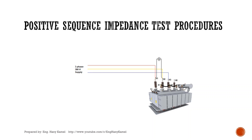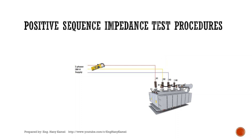Voltage measurement between H1 and H2 will be recorded. Voltage measurement between H2 and H3 will be recorded. Voltage measurement between H3 and H1 will be recorded. Current measurement for H1 will be recorded. Current measurement for H2 will be recorded. Current measurement for H3 will be recorded.